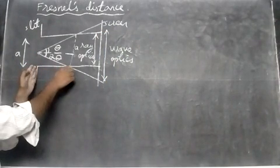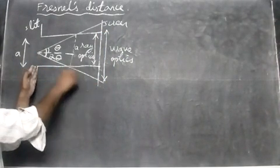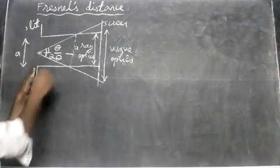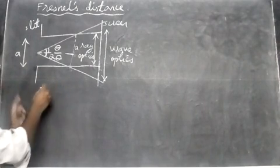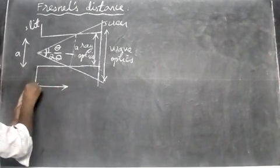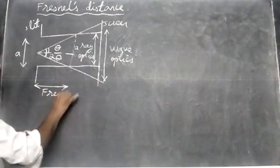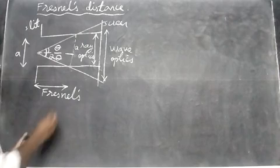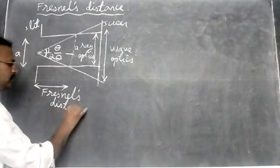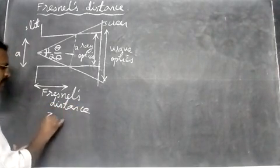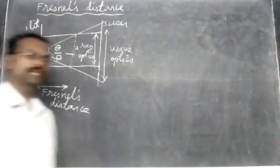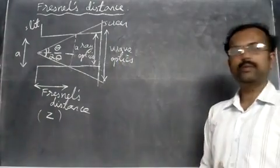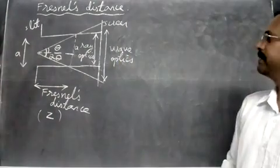Ray optics is obeyed only up to a certain distance — after that, light bends. The distance from the starting point to the edge where ray optics is obeyed is called Fresnel's distance. We denote Fresnel's distance as Z (sometimes written as Z_F).